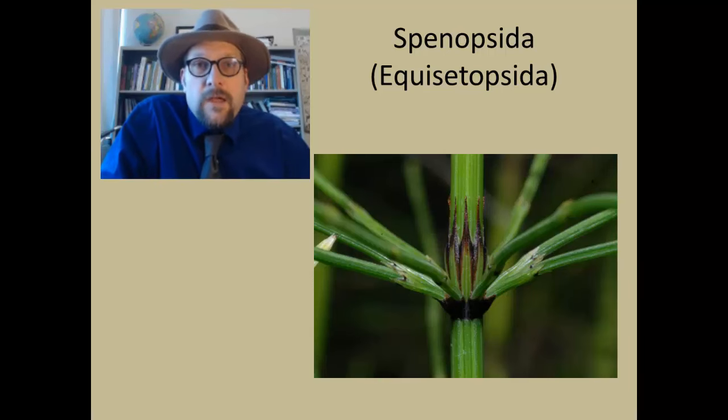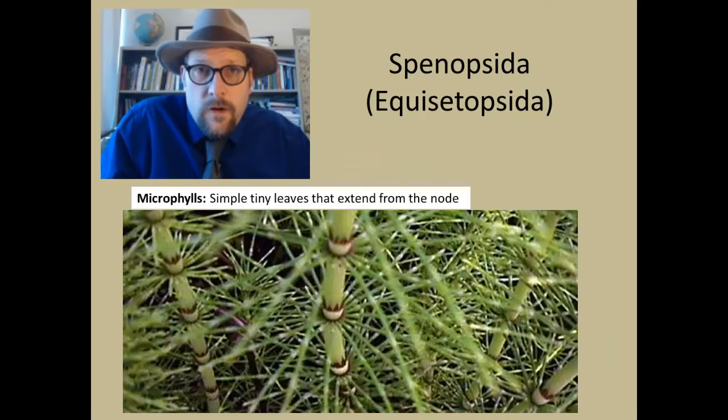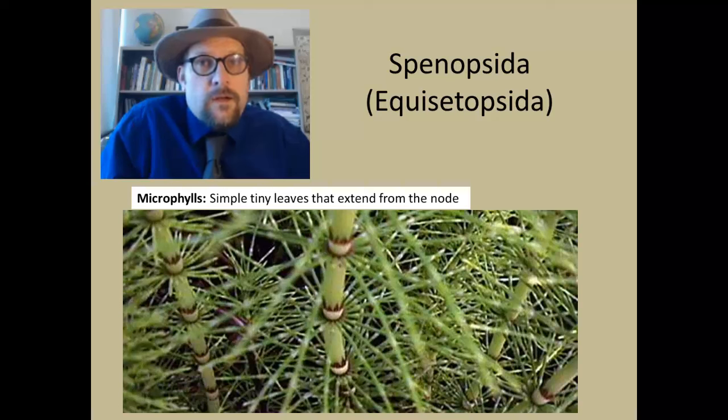Many modern and fossil horsetails have a ring of small leaves that extend out from the node. These grow in a circle around the node and provide additional surface area for photosynthesis. These small radial leaves are called microphylls, a word we encountered when we discussed fossil club moss.